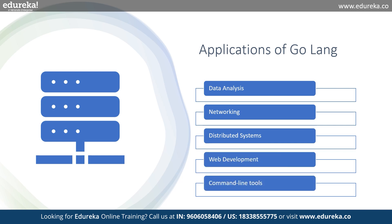Lastly, Go is a great choice for creating command line tools and utilities because of its simplicity of use, cross-platform compatibility, and static binary compilation. Hugo, a static site generator, and InfluxDB, a time series database, are two well-known examples of command line programs written in Go.